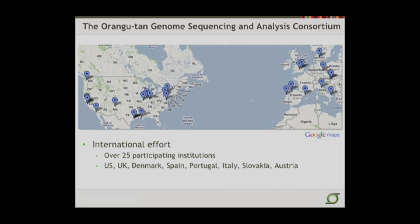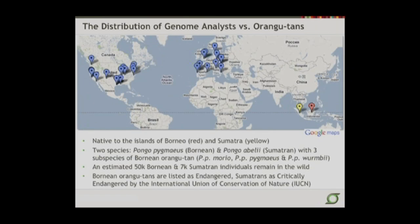There is a comparison to be made here between the distribution of genome analysts and the distribution of orangutans. The analysts are shown in blue, the orangutans in yellow and pink. There's quite a disparity there just right off the bat to understand this genome. The orangs are native to two islands — Borneo in red and Sumatra in yellow. There are two species, the Bornean and the Sumatran, and the Bornean are even divided into three subspecies.